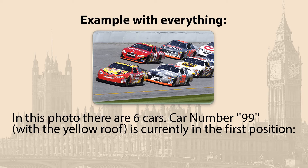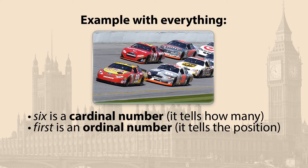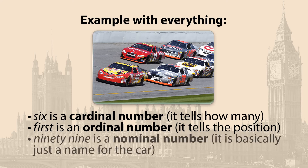In this photo, there are six cars. Car number 99 with a yellow roof is currently in the first position. Six is a cardinal number — it tells how many. First is an ordinal number — it tells the position. 99 is a nominal number — it is basically just a name for the car.